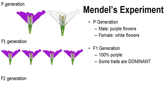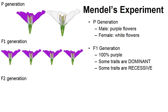What Mendel learned is that some traits are dominant and some traits are recessive. Notice how the white trait was hidden or covered — this is the recessive trait. Purple is the dominant trait because it appears to be hiding the expression of white.